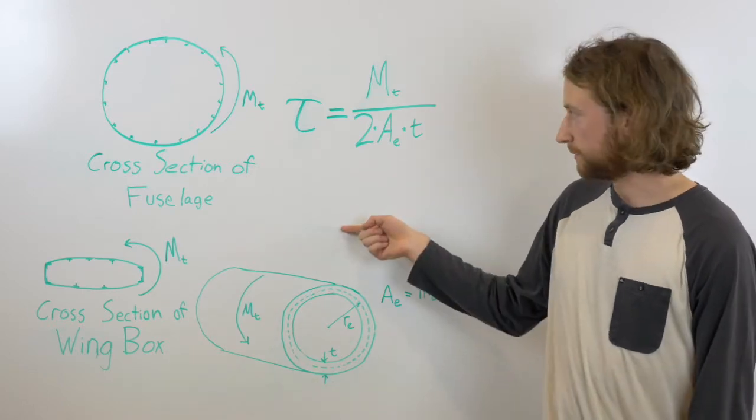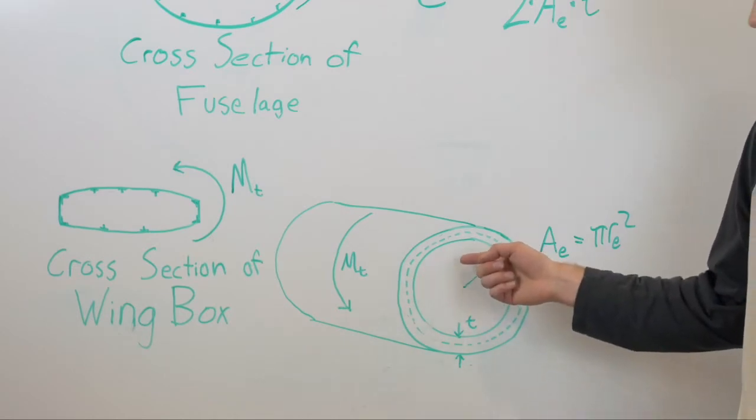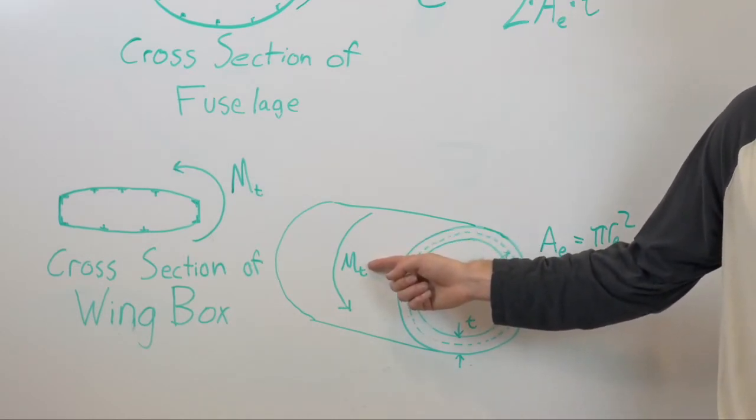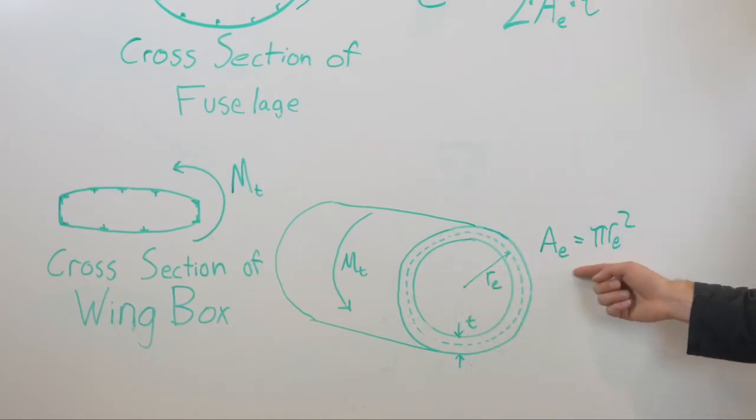In a simplified example, we can see how this equation works. Here we have a circular thin-walled tube with an applied moment MT and an area calculated using pi r squared.